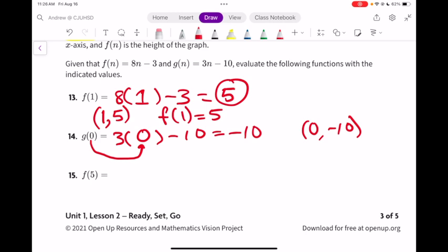f(5), back to the f function. 8 times something minus 3, and that something is 5. 8 times 5 minus 3, 40 minus 3, or 37. And that would be the point (5, 37).